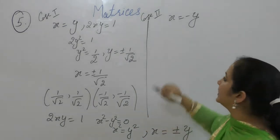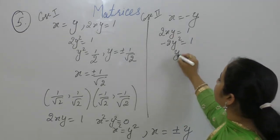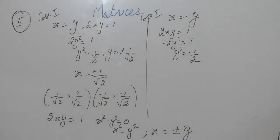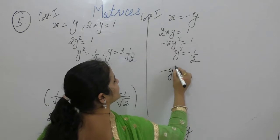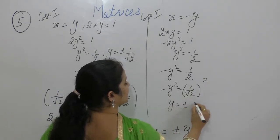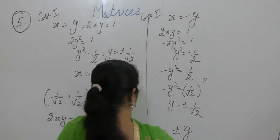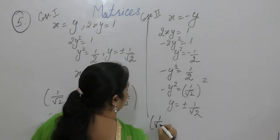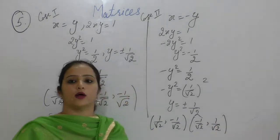Case 2: x = -y. Substituting into 2xy = 1 gives -2y² = 1, so y² = -1/2. This gives y = ±1/√2 in the complex sense. So when x = 1/√2, y = -1/√2, and when x = -1/√2, y = 1/√2.